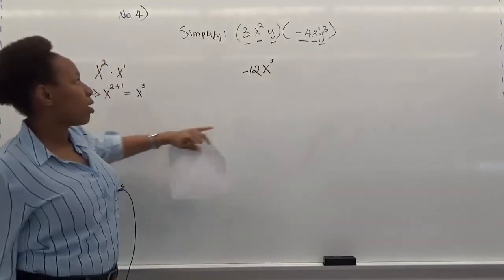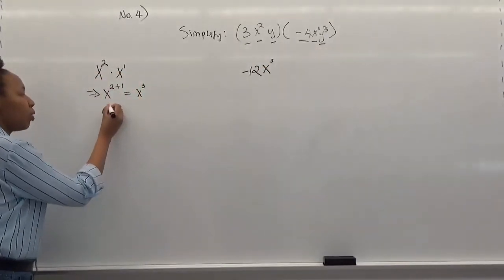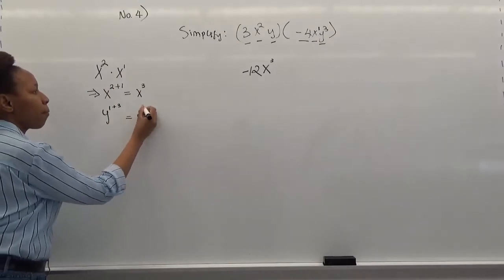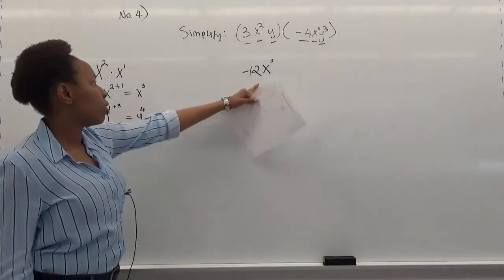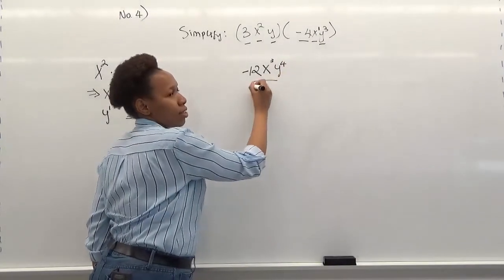The same rule applies to y and y to the 3. And what happens then again is y to the 1 plus 3. And then we have y to the 4. And now, our final answer is going to be minus 12x cubed and y to the 4. That's our final answer.